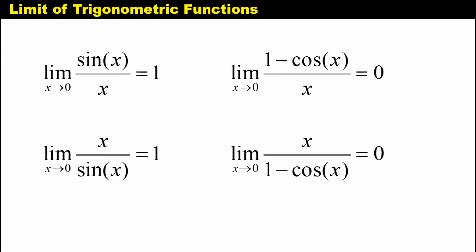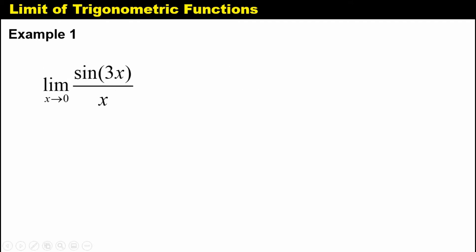Now let's have a few examples to illustrate how to use these four special limits. Example number one: the limit of sine of 3x over x as x approaches 0. We have to look at the value of the inside angle and the denominator. Since they are not similar, we cannot apply the special limits directly. If you're in a hurry, you can just divide 3x and x, so the answer is 3. But we have to show our solution.